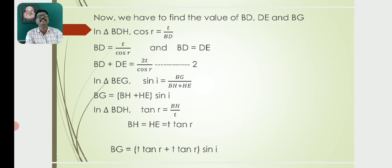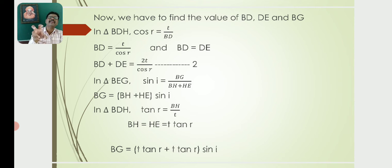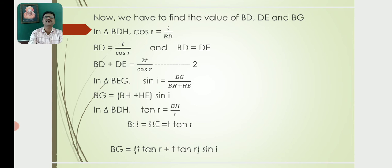We need to find the values of BD, DE, and BG. In triangle BDH, cos R = T / BD, so BD = T / cos R. Since BD = DE, we get BD + DE = 2T / cos R. This is equation (2).